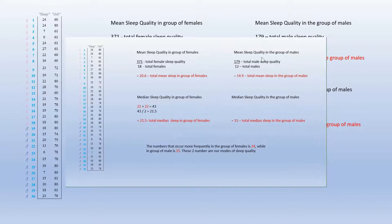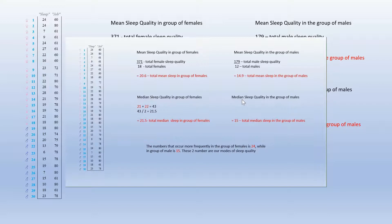We will also calculate the mean of sleep quality in the group of males so we can compare the result to know the significance of the sleep quality between males and females. We have 179 total male sleep quality divided by 12 total males, giving us 14.9 as the mean sleep in the group of males. For the median, if we sort the numbers of sleep quality in the group of males, we get both 15 in the middle, so our median is 15.